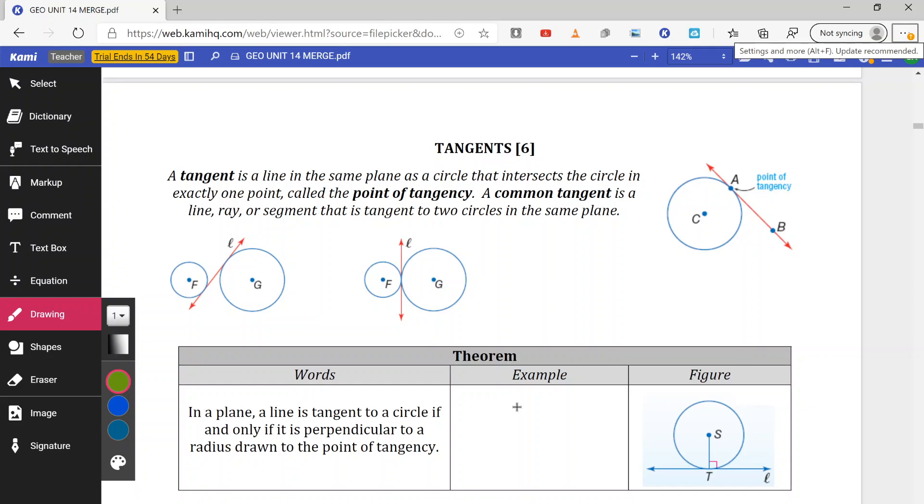So here we have circle C with line AB. Point of tangency is at point A. Circles F and G in line L, notice those are a common tangent because that line touches or is tangent to circle G and circle F at the same time. Same with the other figure here, the smaller circle F and the larger circle G. Line L is tangent to both F and G, so they have a common tangent.